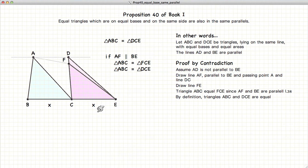But we've already stated that ABC was equal to DCE. So if ABC is equal to FCE, and ABC is equal to DCE, which implies that these two triangles are equal.